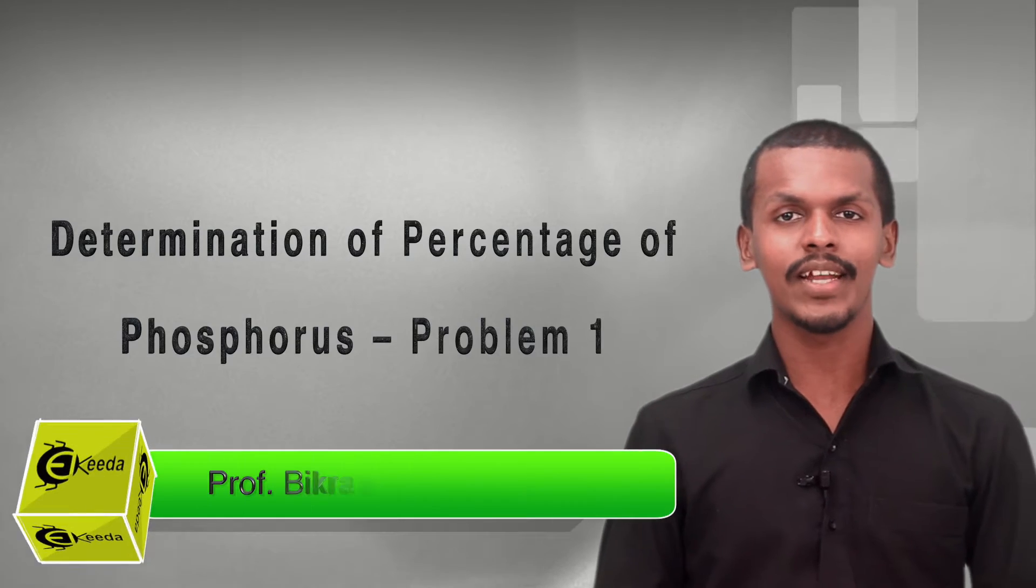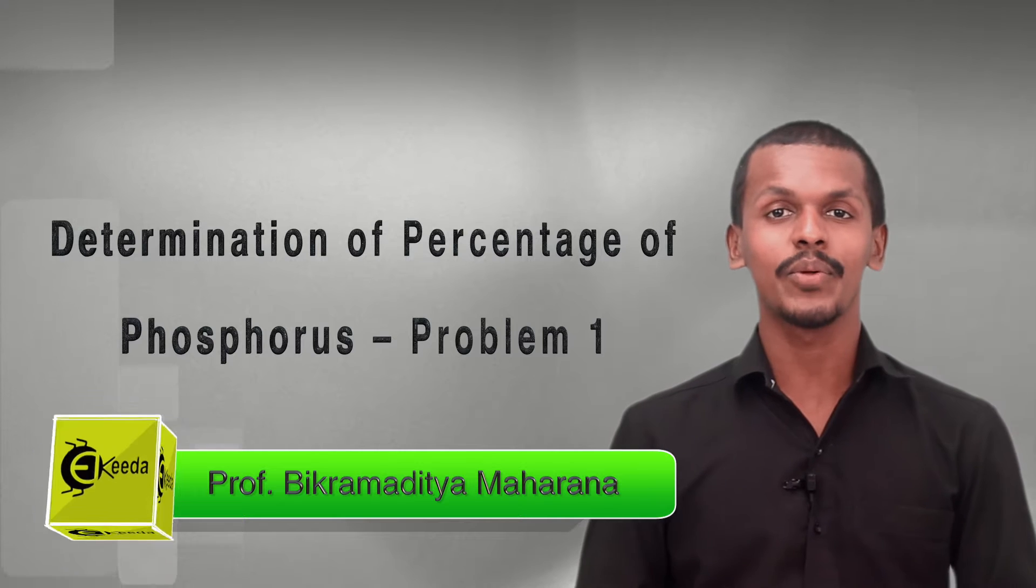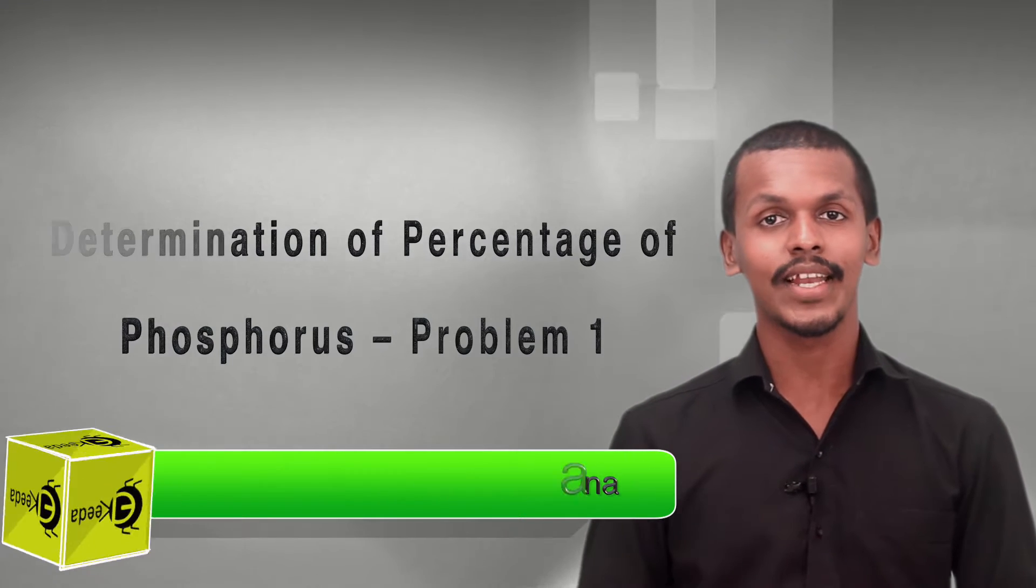Chapter: Some Basic Principles and Techniques in Organic Chemistry. We are doing the topic determination of phosphorus in an organic compound.